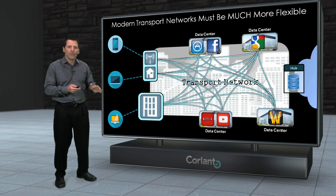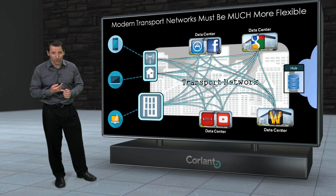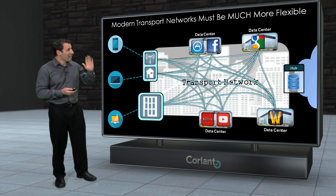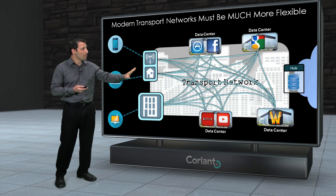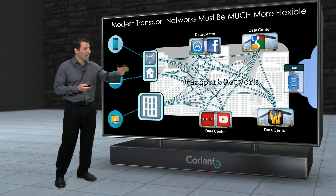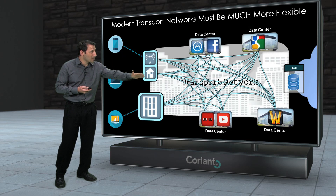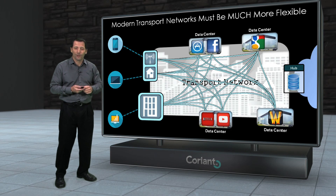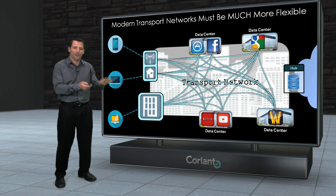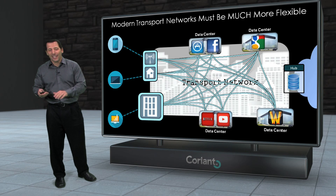What you need is a transport network that's both flexible but also adaptable — that I can not only set up the network exactly the way I need to meet the traffic patterns of the moment, but I can also adapt as the traffic patterns change over time in the network. And the way I think about the difference between flexibility and adaptability, I compare it to Legos versus Play-Doh.